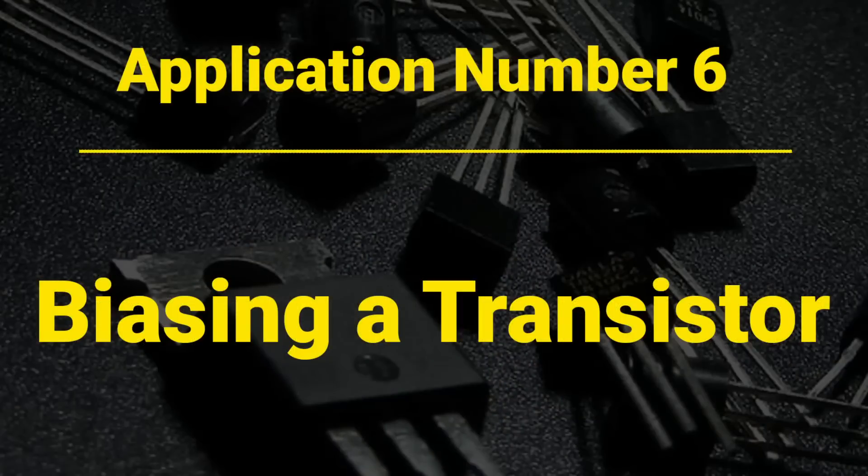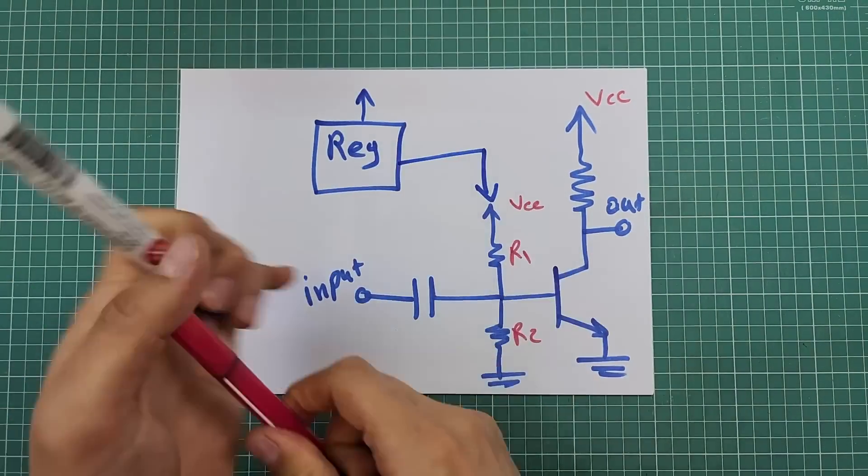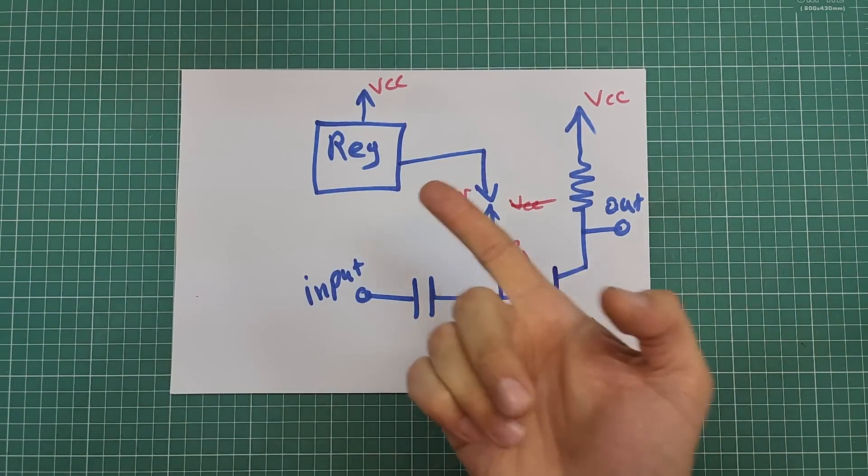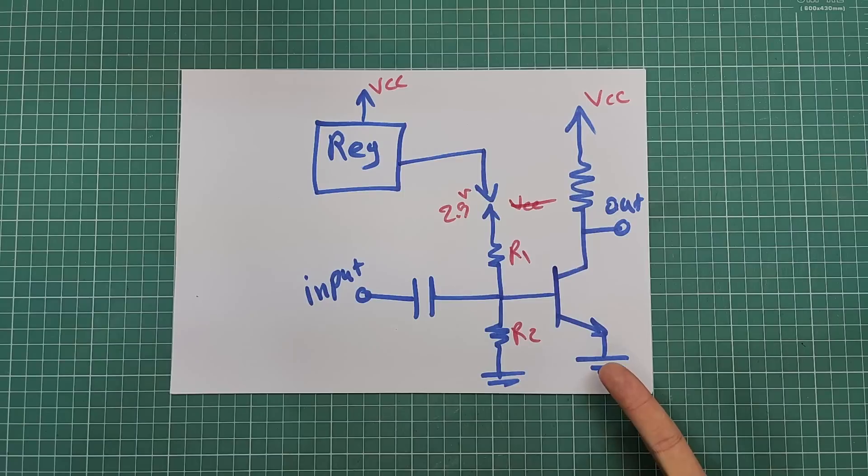Application number six: biasing a transistor. It is simple. We can use a fixed, steady, and stable voltage provided by a voltage regulator to create the biasing voltage. Now, by putting a regulator here, we can ensure that this transistor will remain in the active region of operation all the time and will not be affected by fluctuations in the VCC.